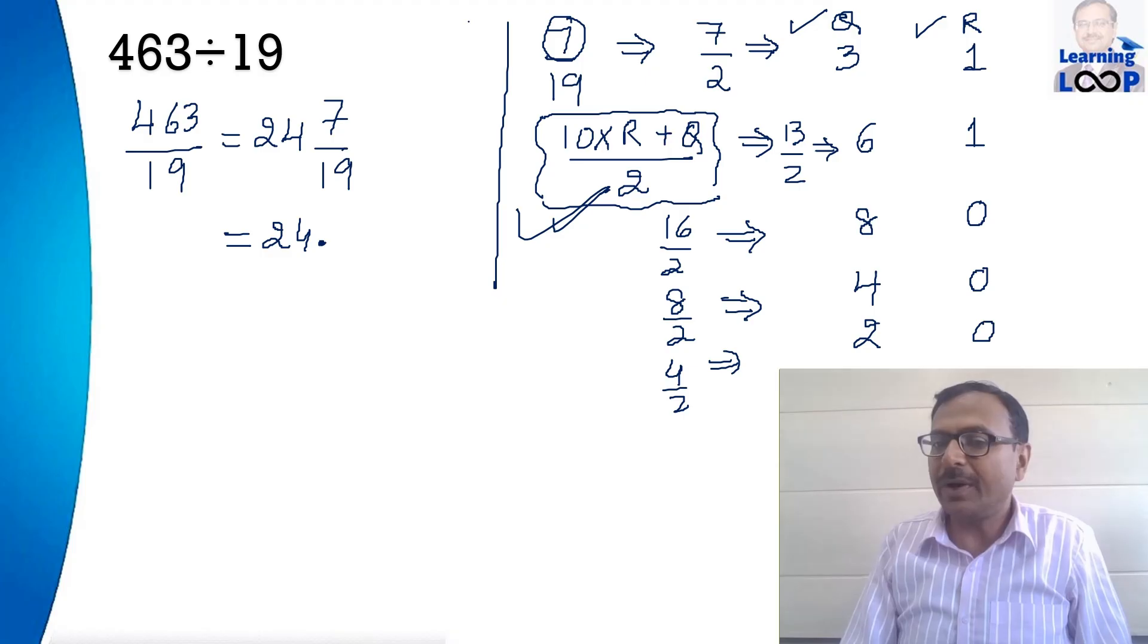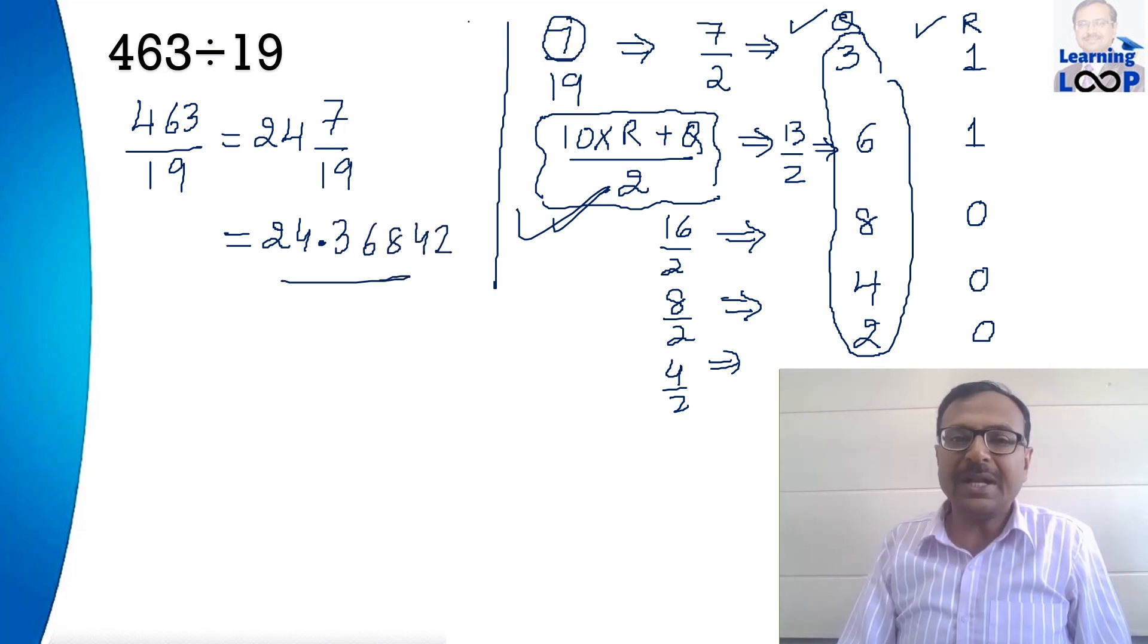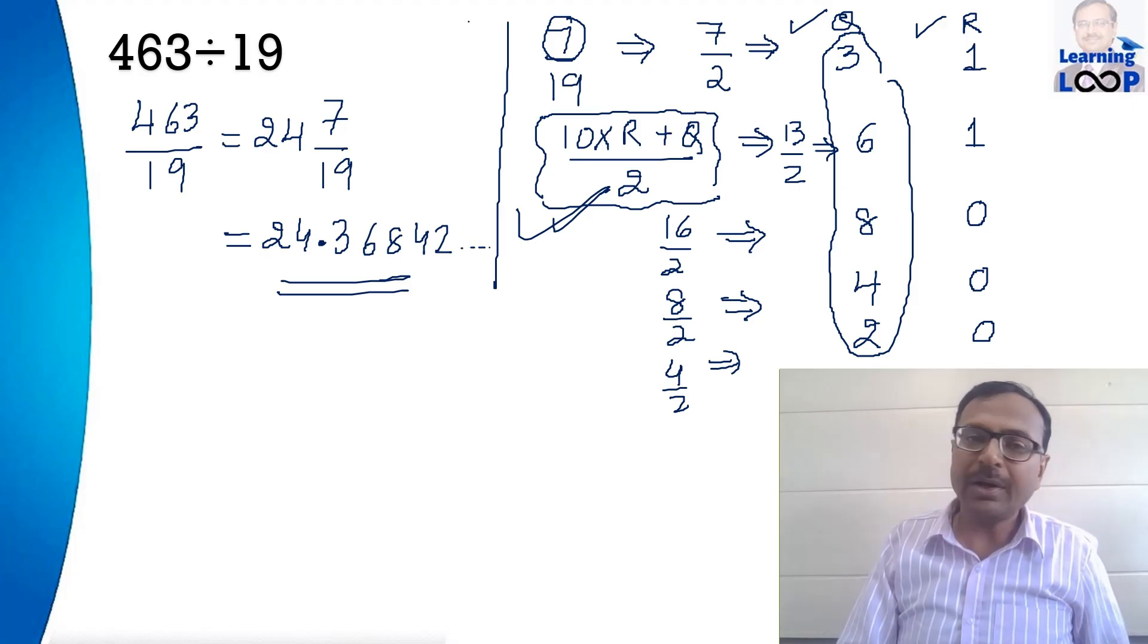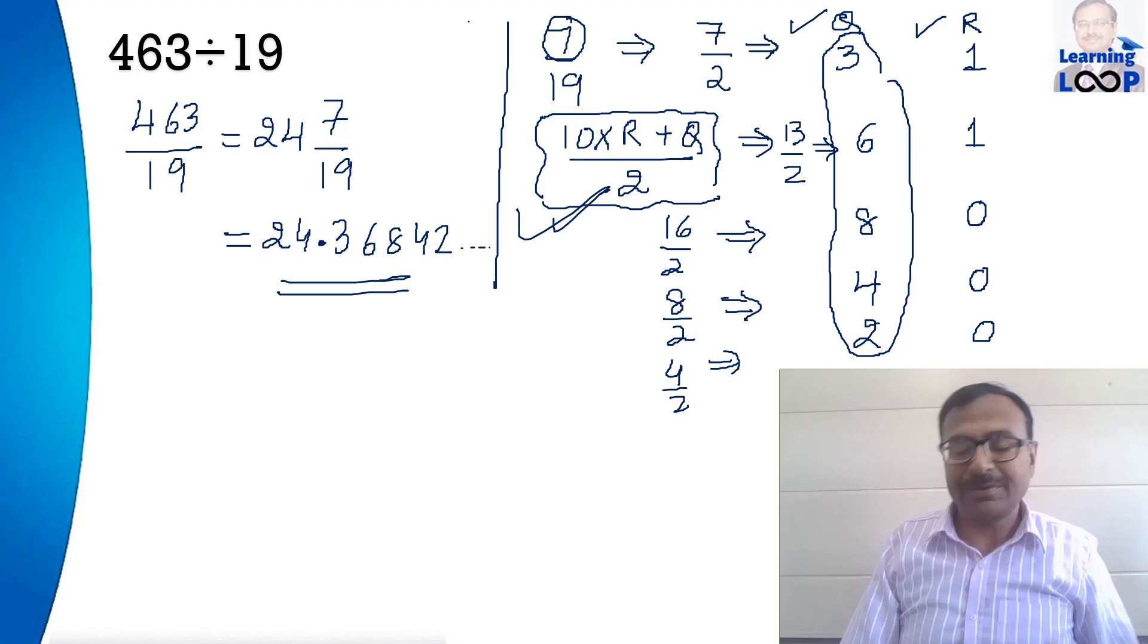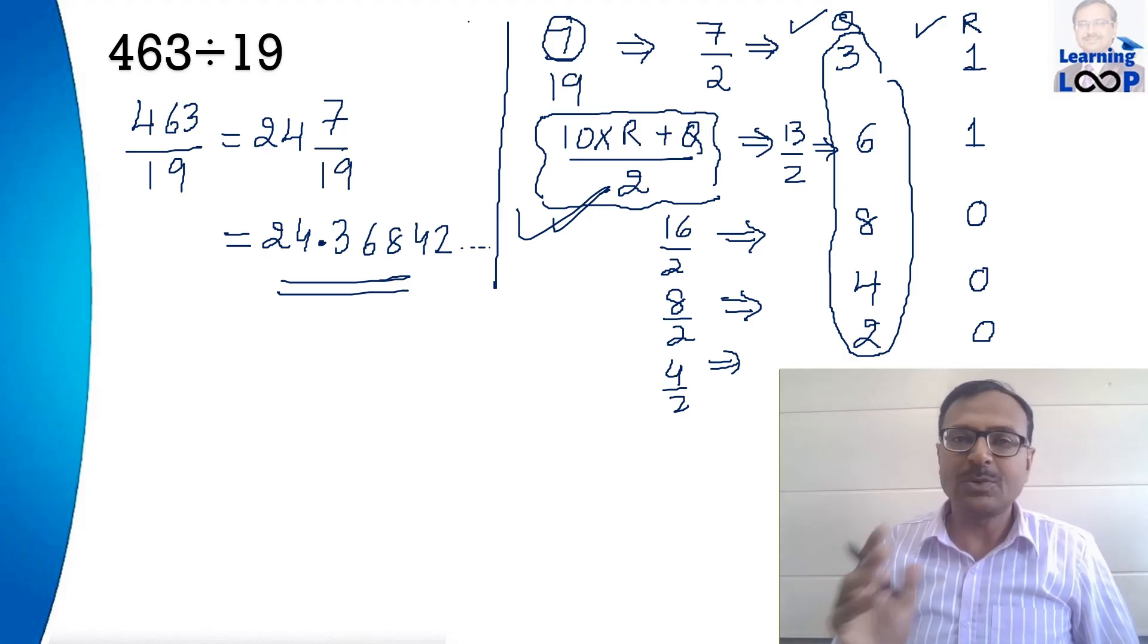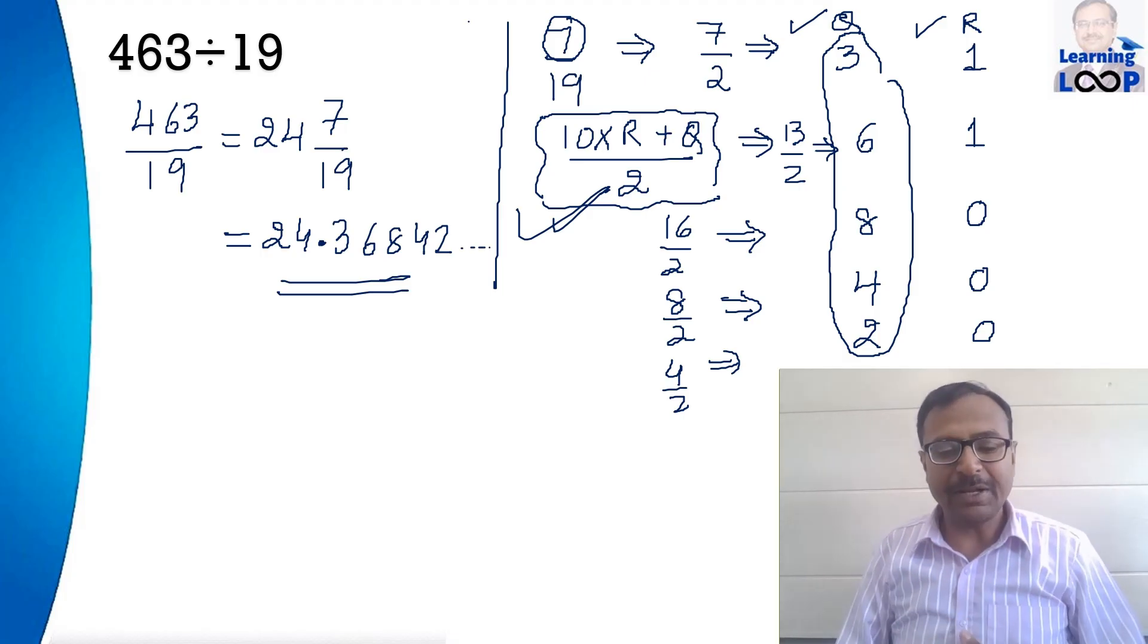So I think these many decimal places should be enough. So the answer for the question is 24.36842 and it will go on and you can check now. Just pick up the calculator. 463 divided by 19 is going to give you this decimal number.